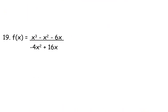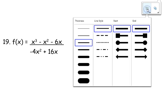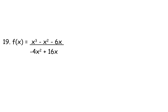Let's look at one more — number 19: x cubed minus x squared minus 6x over negative 4x squared plus 16x. Again, we're factoring the top. We need to begin with the GCF of x, leaving us with x squared minus x minus 6.